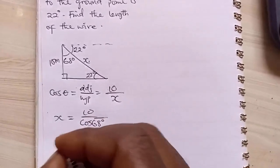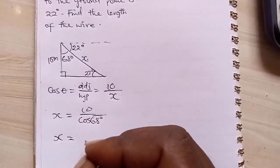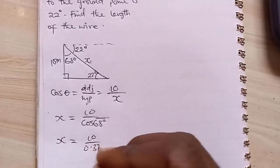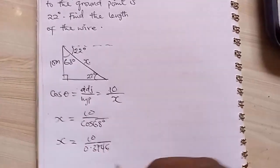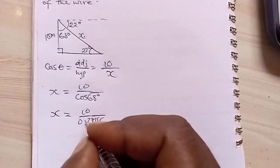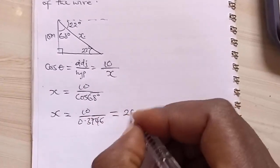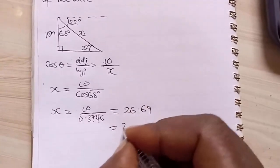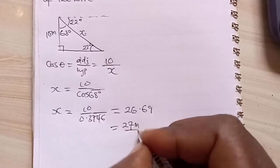So X is equal to, if we have the tens, this is 0.3746. If we divide that, we're going to have 26.69. If we approximate it, you can get 27 meters. That's the height of the building.